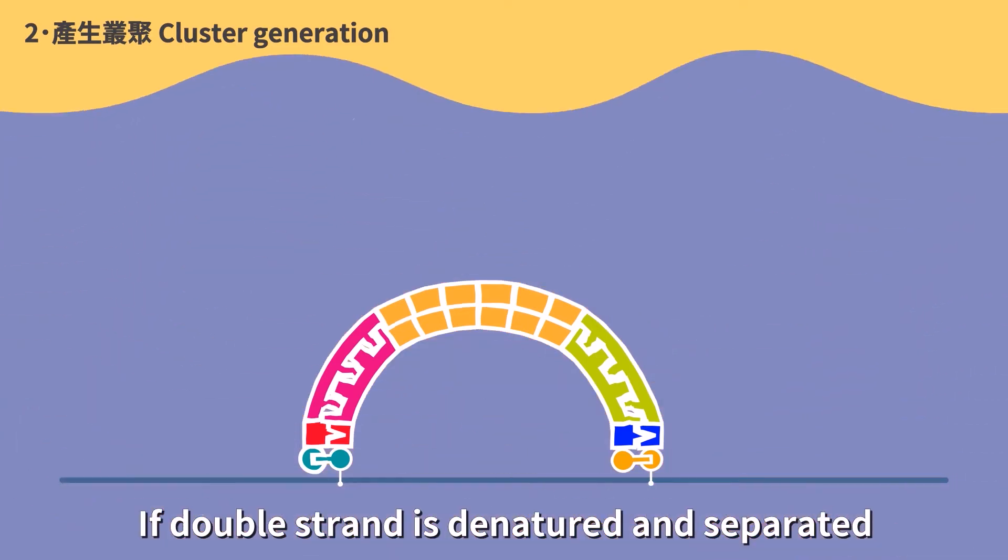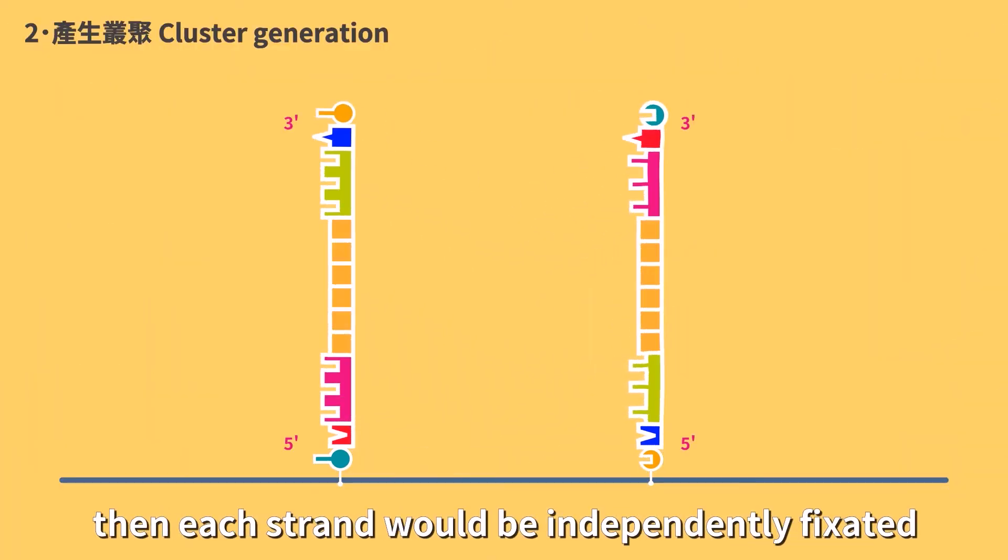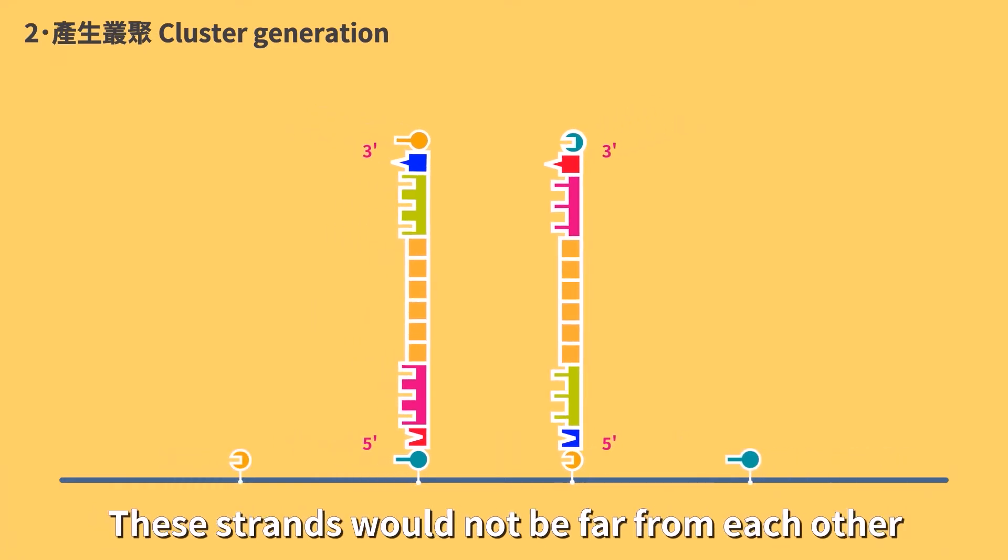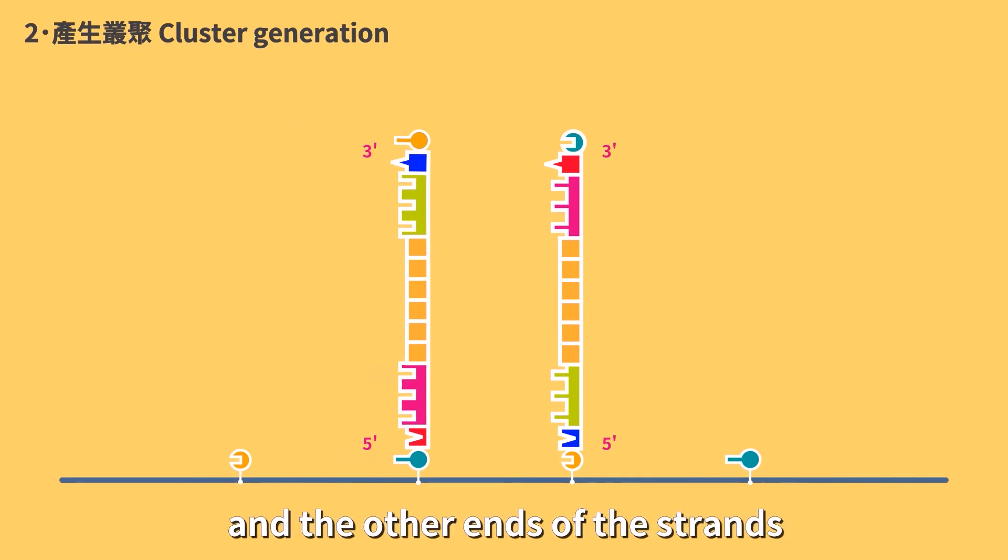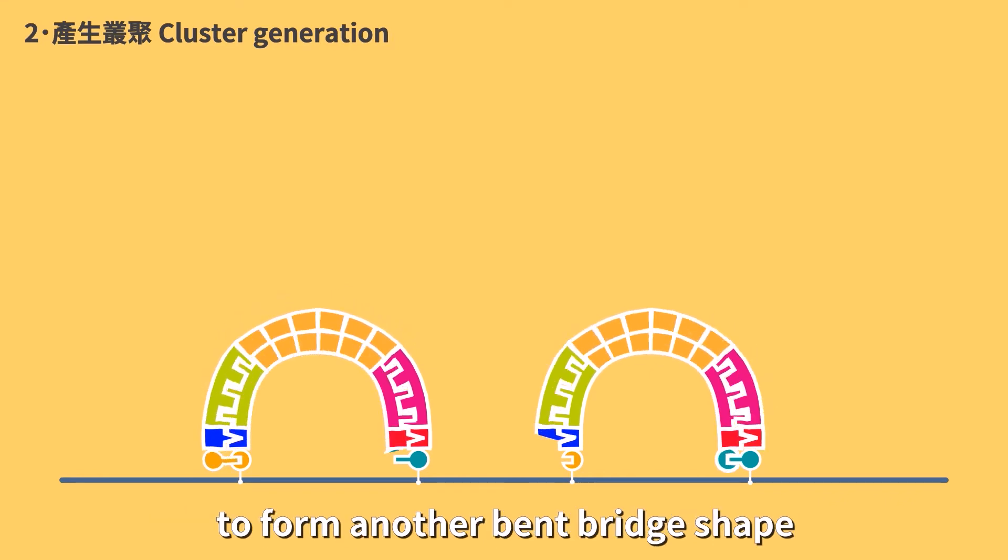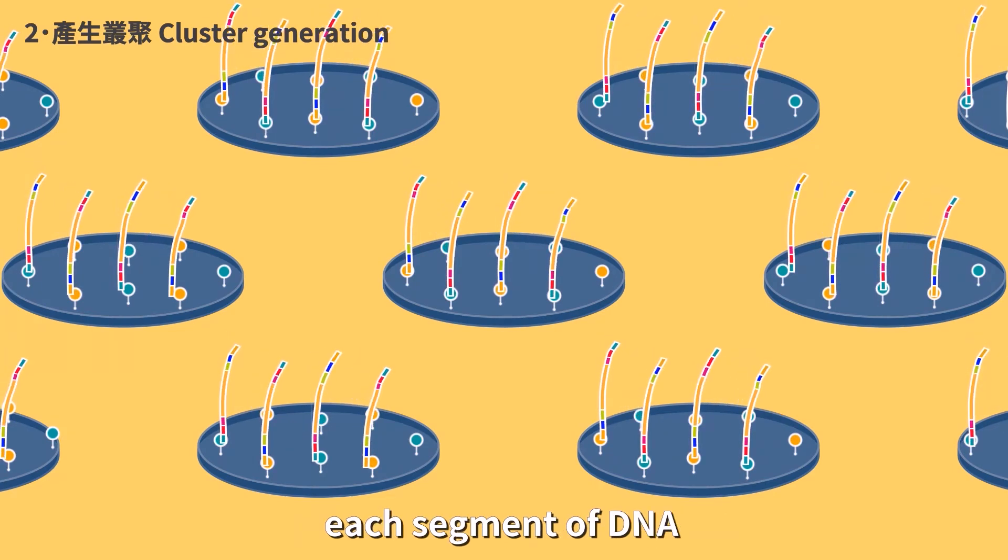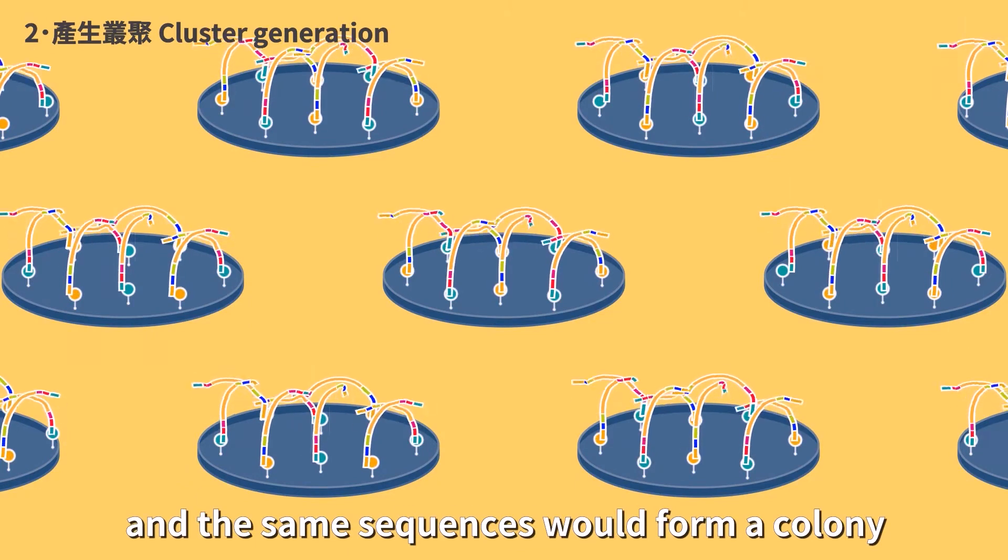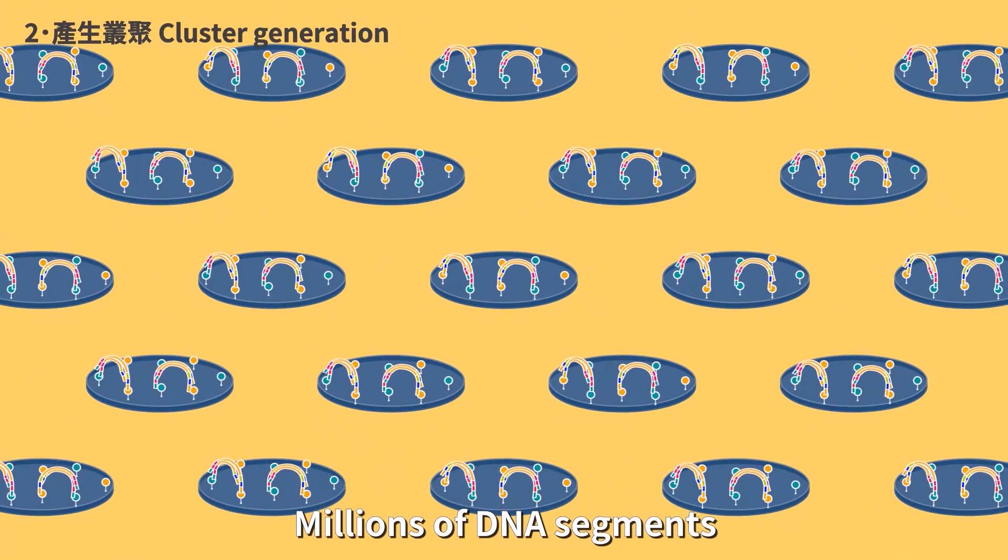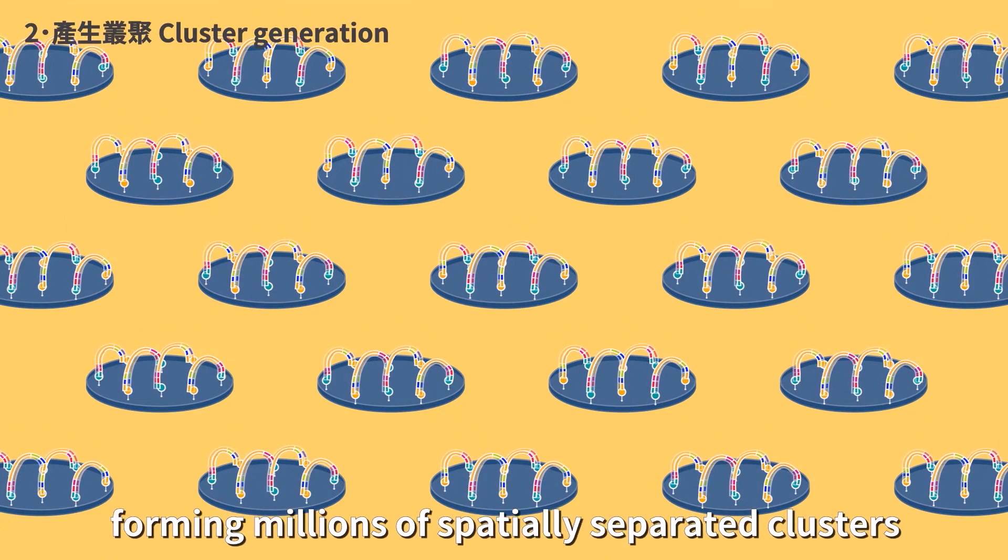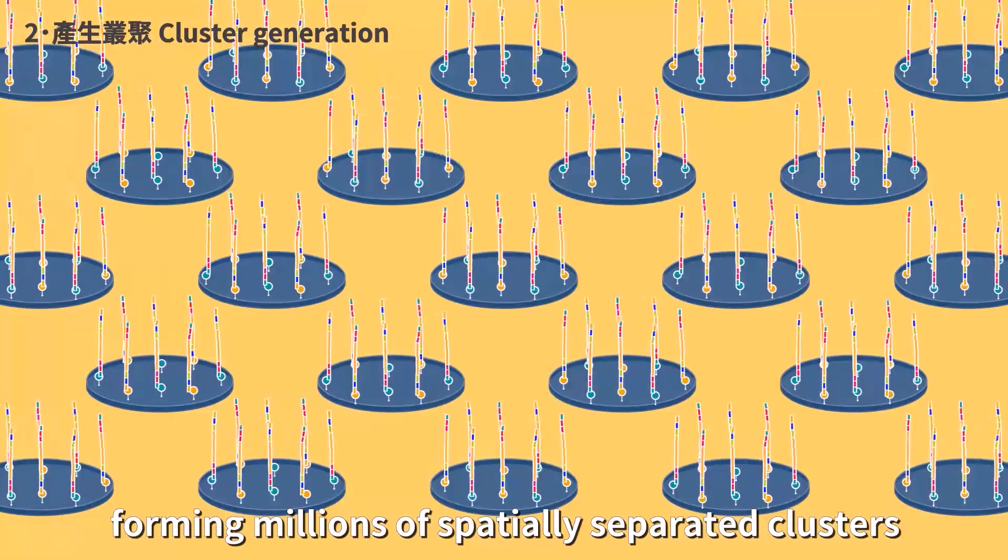If double strand is denatured and separated, each strand would be independently fixated to the bottom of the well at the five prime end. These strands would not be far from each other, and the other ends can continue to bind with appropriate oligonucleotides nearby to form another band bridge shape and elongate complementary strands. After many repeated cycles, each DNA segment would be amplified around it, and the same sequences would form a colony called a cluster. Millions of DNA segments are undergoing amplification in each block of the flow cell simultaneously, forming millions of spatially separated clusters.